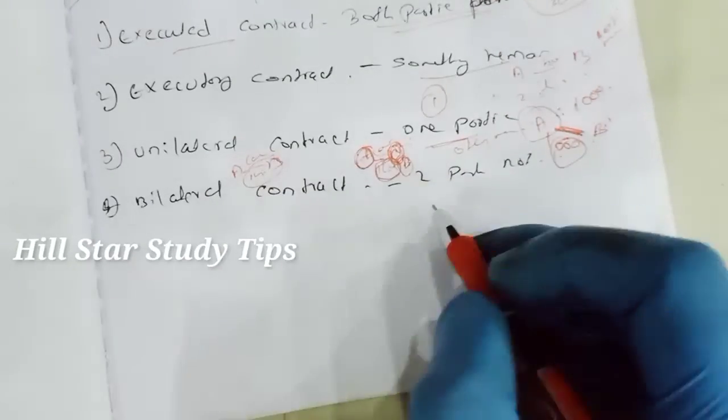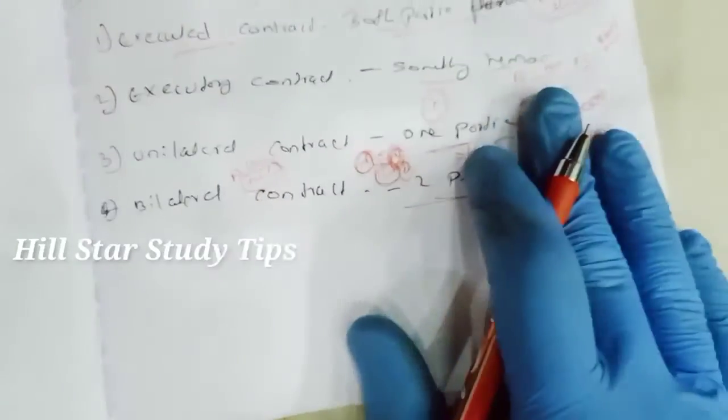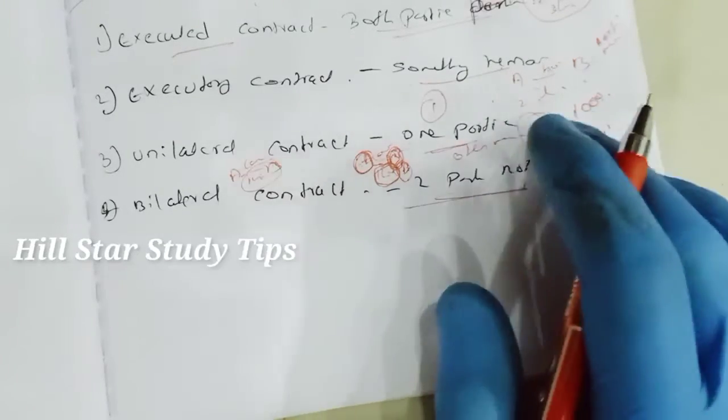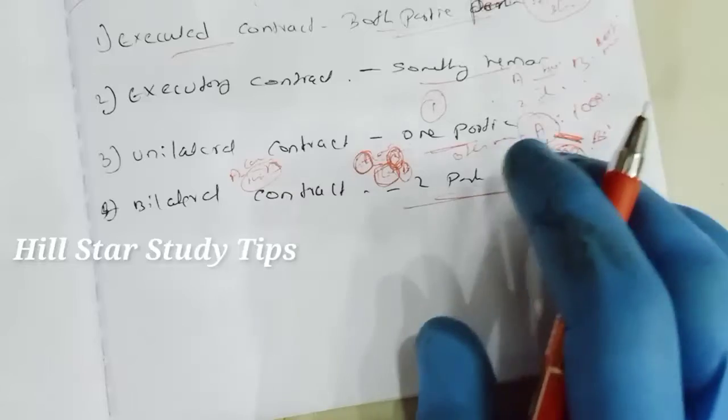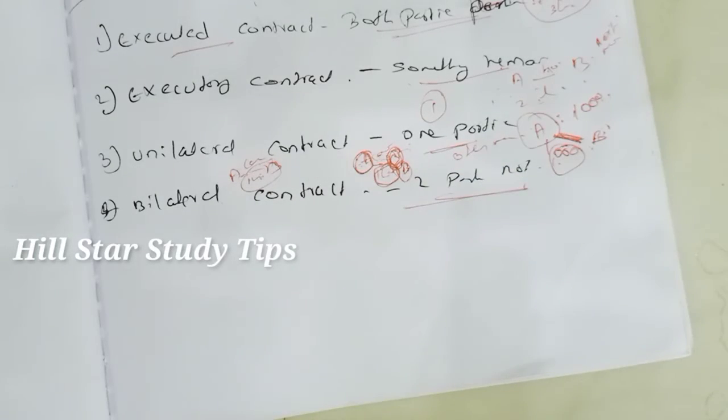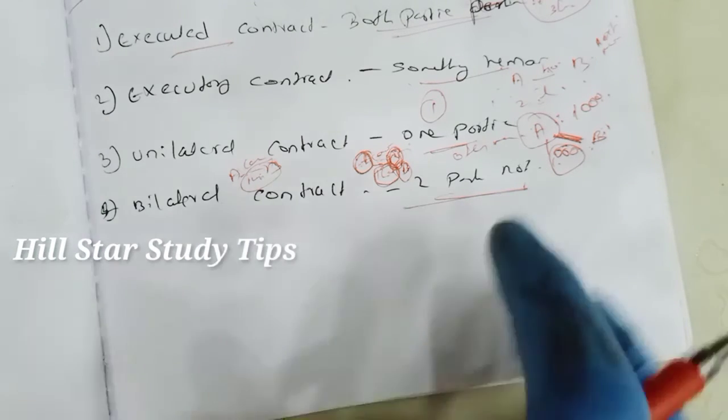So what is the bilateral contact initiative? It is an agreement in which each of the parties to a contact makes a promise or promises to another party. This is the most prevalent kind of contact. For if a contact is entered into purchase a plot of land, it is bilateral contact.